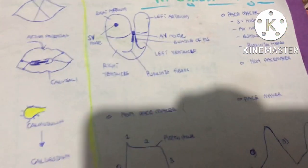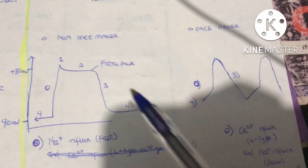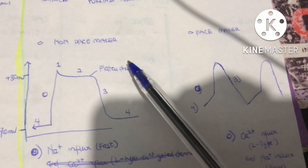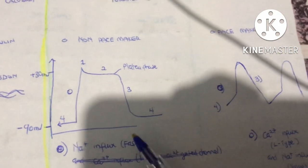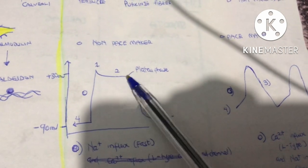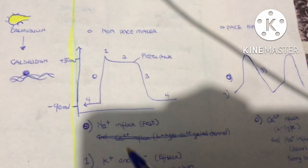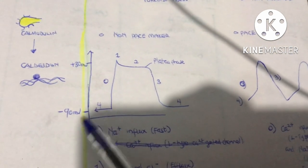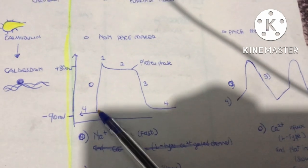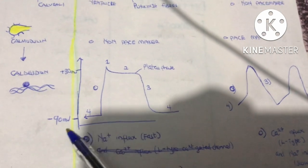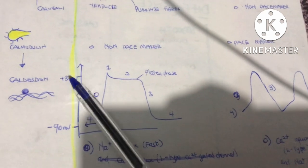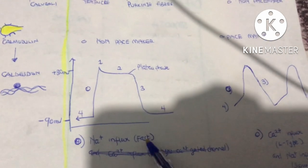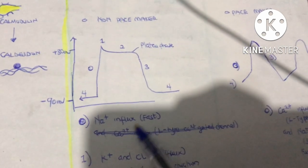When the atria are contracting, the ventricles are relaxing; when the ventricles are contracting, the atria are relaxing. Now let's look at action potential for the non-pacemaker cells, which involves four phases: phase 0, 1, 2, 3, and 4. The resting membrane potential for the non-pacemaker is negative 90 millivolts. Phase 0 is the depolarization phase, due to fast sodium influx.